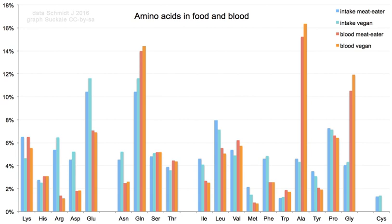Amino acids are used for a variety of applications in industry, but their main use is as additives to animal feed. This is necessary since many of the bulk components of these feeds, such as soybeans, either have low levels or lack some of the essential amino acids. Lysine, methionine, threonine, and tryptophan are most important in the production of these feeds. Amino acids are also used to chelate metal cations in order to improve the absorption of minerals from supplements.